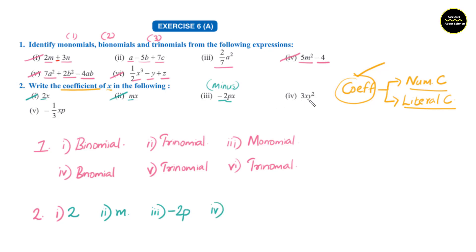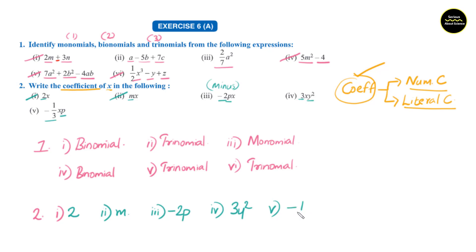Fourth question: 3xy square. The coefficients are 3 and y square, so the answer is 3y square. Fifth question: minus 1 by 3 xp. Again, the minus sign is also included, and the other coefficient is p. The answer is minus 1 by 3 p.